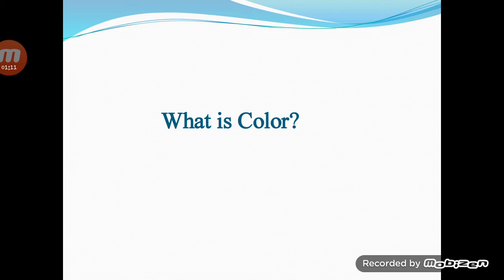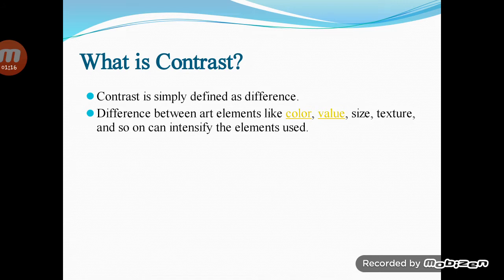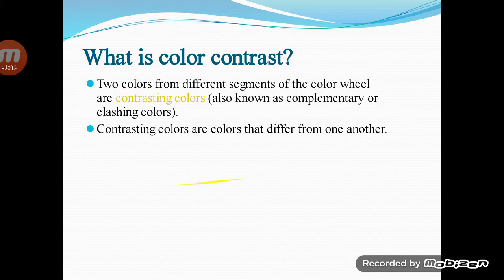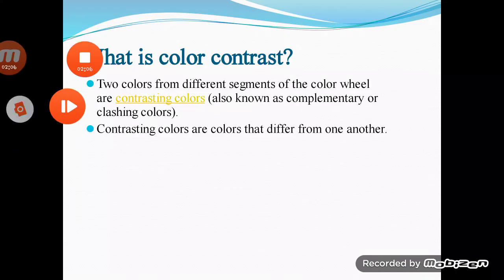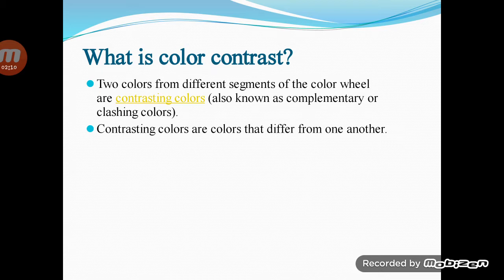Sir Isaac Newton first showed that natural white light is a combination of all the colors of the visible light spectrum. What is contrast? Contrast is simply defined as difference — difference between art elements like color, value, size, and texture can intensify those elements. Contrast is closely related to variety; it is usually considered a principle of art that creates variety.